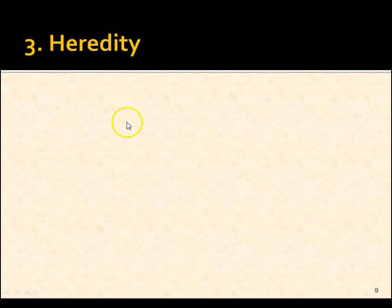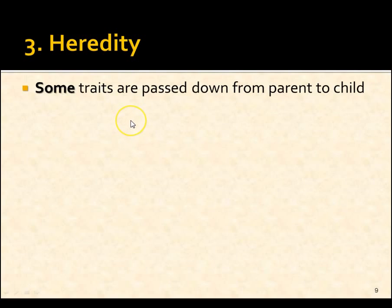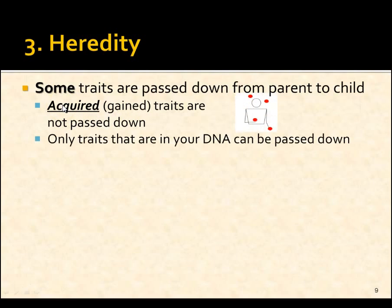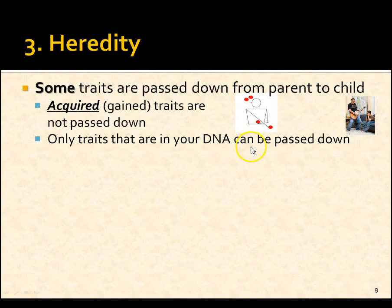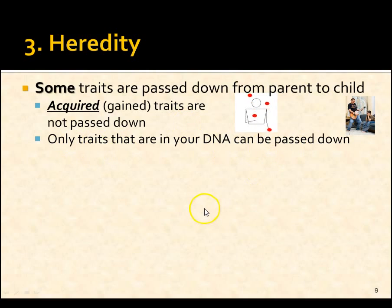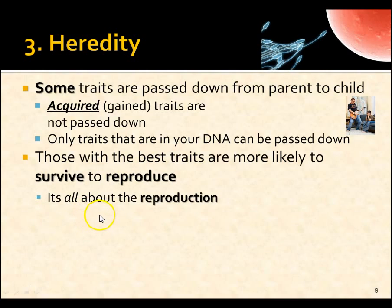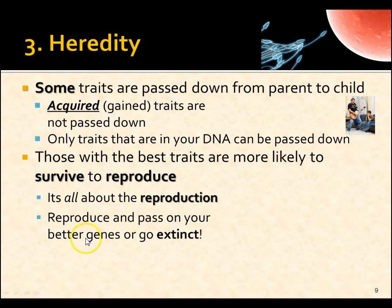Finally, heredity. Remember: variation, selection, and heredity. Some traits are passed on from parent to child. Things that you acquire in your life are not. I can juggle, but my kids can't juggle — it's an acquired skill. They don't have the juggling gene. Like guitar: if your dad plays guitar, maybe you'll play guitar too, but you still need to practice. It's an acquired trait — it's not in your DNA. Whoever has the best traits in their DNA is more likely to survive and reproduce. Reproduce and pass on your better genes, or you go extinct.